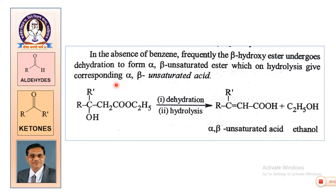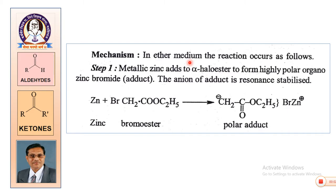The beta-hydroxy ester undergoes dehydration and then hydrolysis, giving alpha-beta unsaturated acid and ethanol.